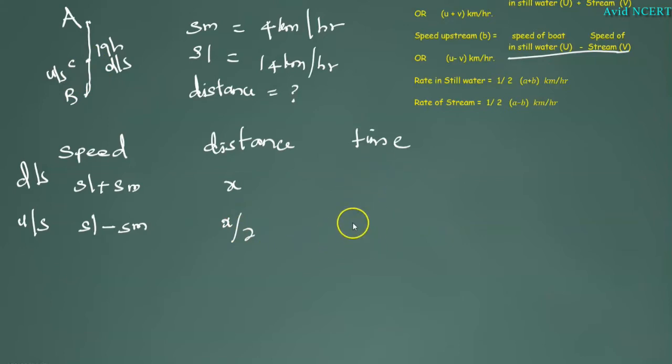The time we have to find in both cases. The time formula is time equals distance by speed. In this case, speed is SL plus SM, which is 14,